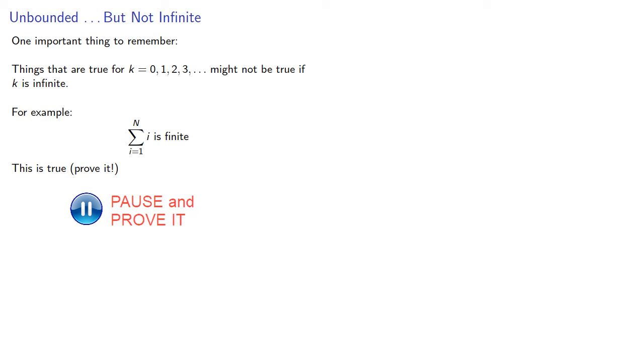One important thing to remember: things that are true for any whole number might not be true if k is infinite. For example, the statement that the sum of the first n integers is finite is true, you should prove it. But if we allow that sum to be over an infinite number of numbers, the statement that the infinite sum is finite is false.